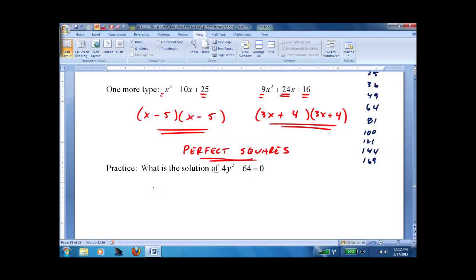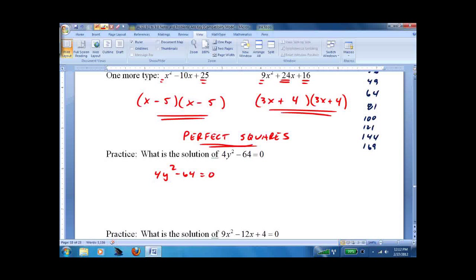So how do we solve 4y squared minus 64 equals 0? Now you look and you say, okay, it's got a minus, it's got a perfect square. So that should work out where I get 2y plus 8, 2y minus 8. And I can solve it. y equals negative 8 over 2 equals negative 4.